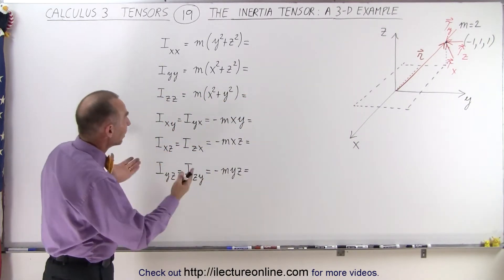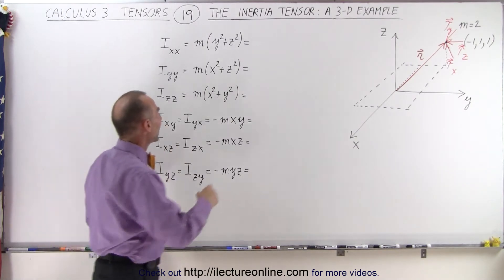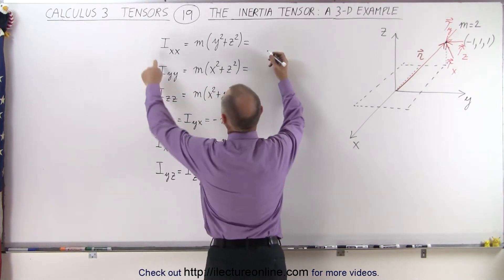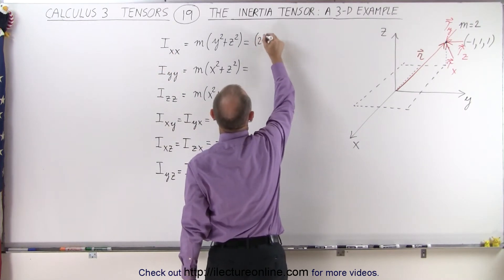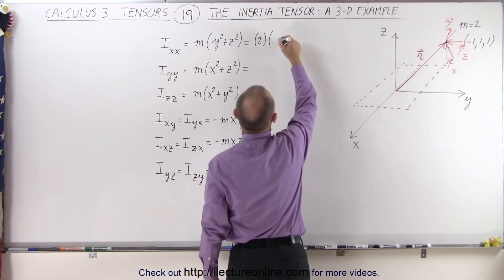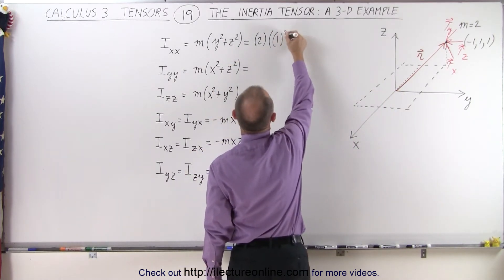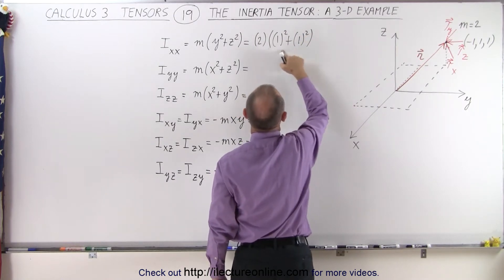So let's find the elements, all nine of them, of the inertia tensor. For Ixx, the upper left diagonal element, we have the mass, which is now equal to 2, times y squared plus z squared. So we have y, that's 1, squared plus z, that's 1, squared. So we have 1 plus 1 is 2 times 2, which is equal to 4.